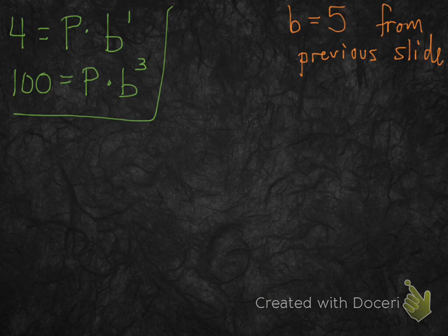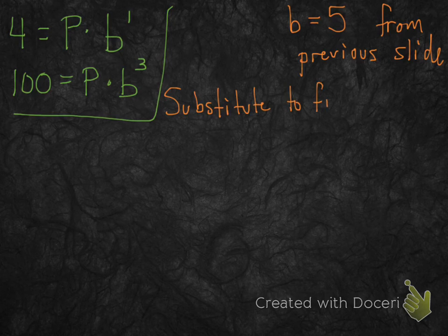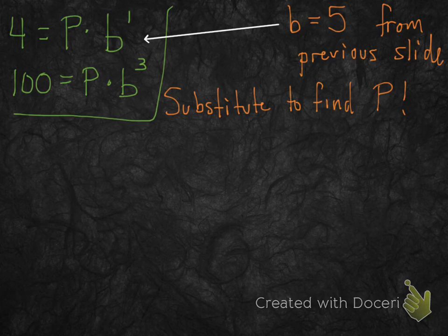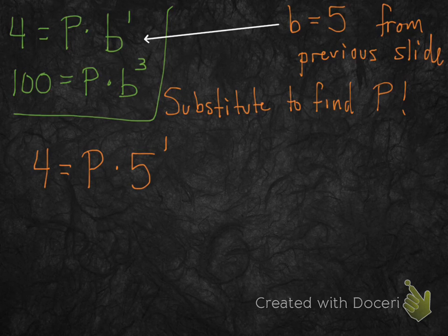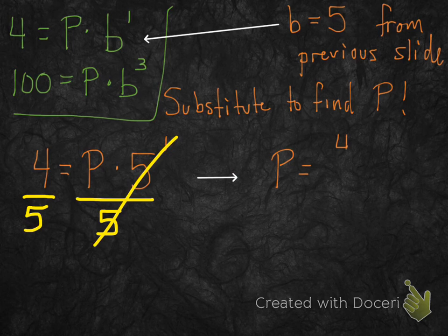So we're halfway there. We've got b, and actually finding p is much easier than finding b. All you have to do is substitute. You plug 5 in for b, into either one of the equations. I'm going to plug it into the first one, and then, of course, 5 to the 1 is just 5, so you divide both sides by 5, and you get p is 4 fifths. So now we have b, and we have p.